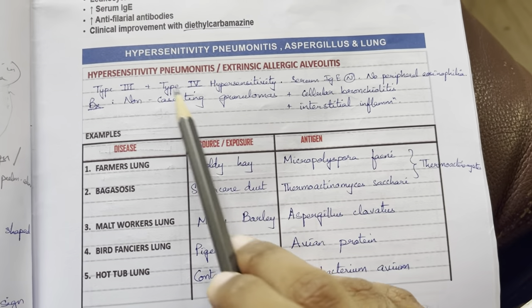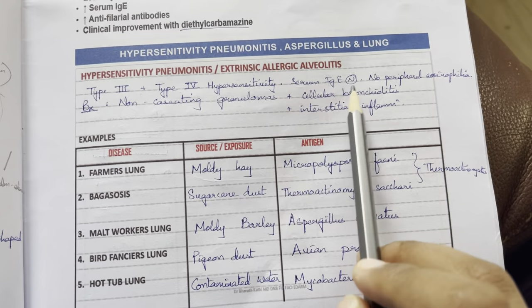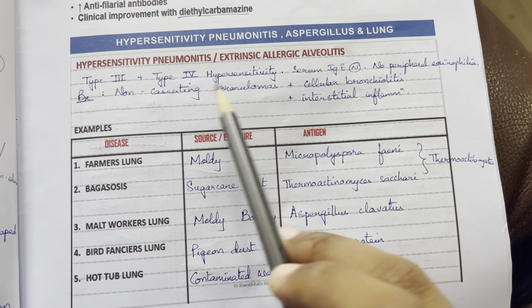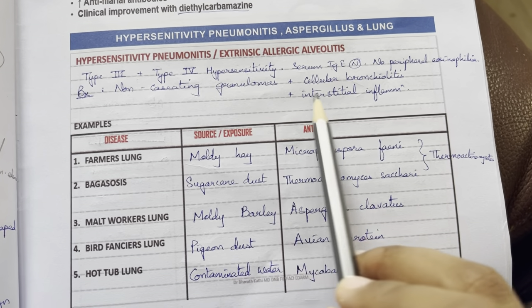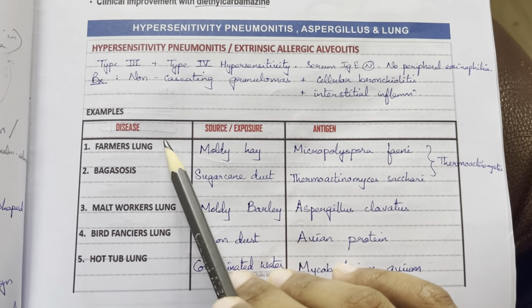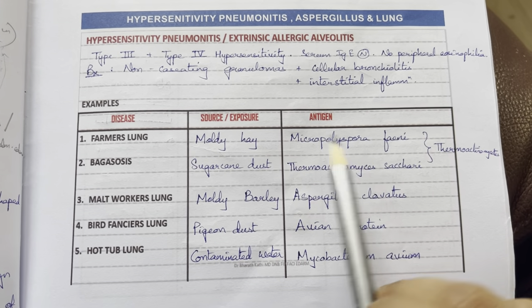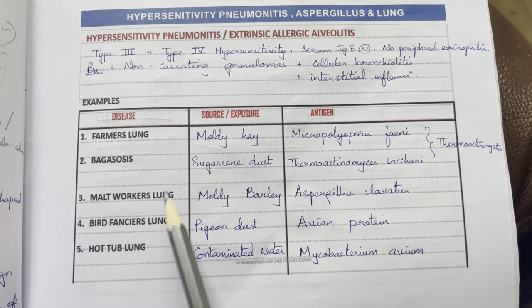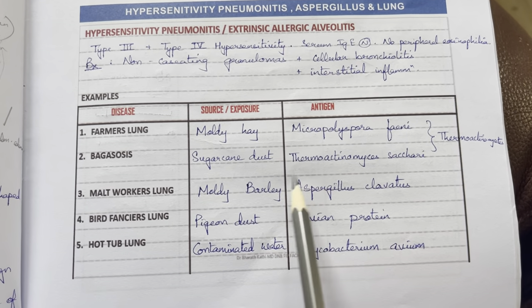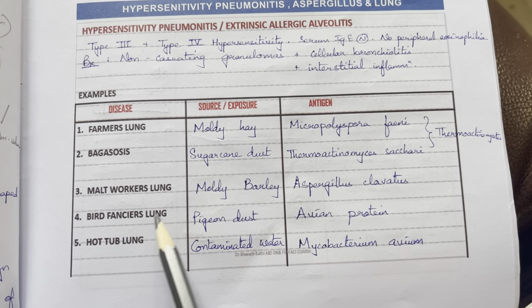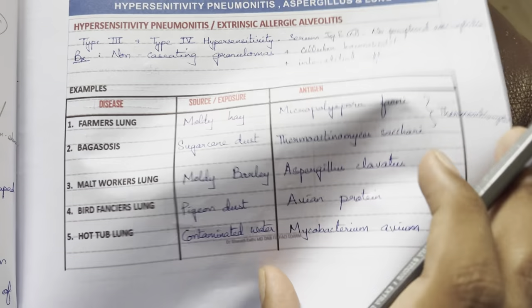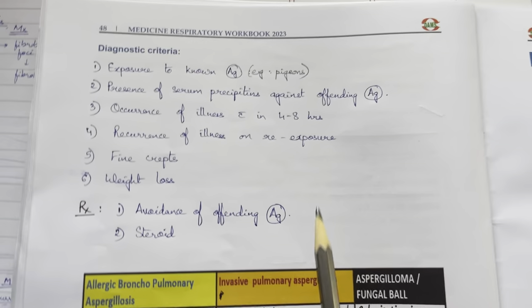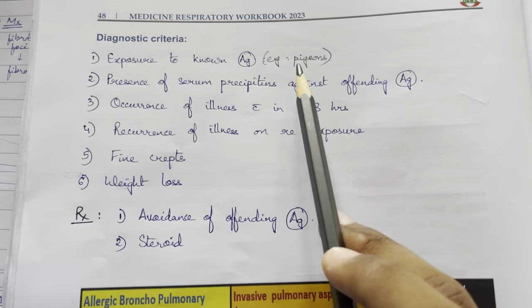Hypersensitivity pneumonitis is a type 3 and type 4 hypersensitivity reaction. Serum IgG is normal; there is no peripheral eosinophilia; non-caseating granulomas are present. Examples include farmer's lung (Micropolyspora faeni), bagassosis (Thermoactinomyces sacchari), malt worker's lung (Aspergillus clavatus), bird fancier's lung, and hot tub lung.